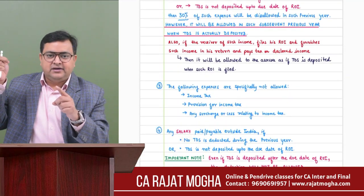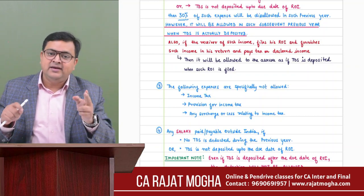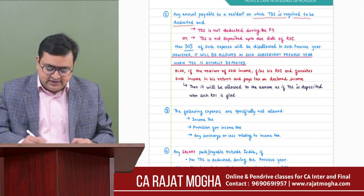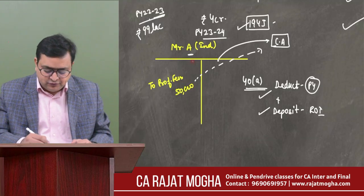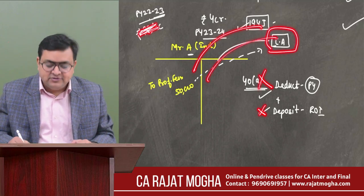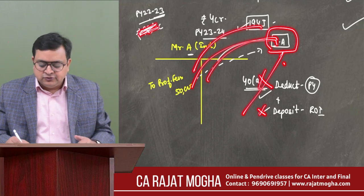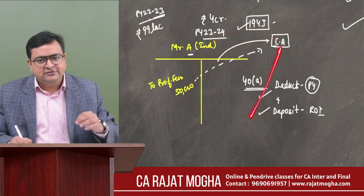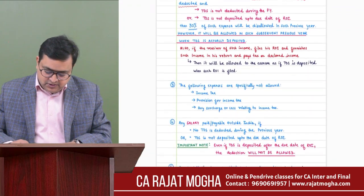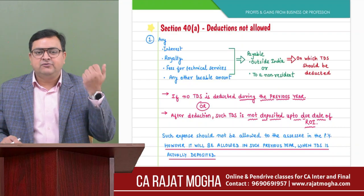The receiver-files-ROI exception applies to resident payments as well: if Mr. A has not deducted or deposited TDS but the Chartered Accountant (receiver) duly files his ROI, mentions the income, and pays tax on it, then on the date when the receiver files his ROI, TDS is assumed deposited and the deduction is allowed. Third point of Section 40(a): if you are showing income tax or provision for income tax as an expense in your PnL account, it is specifically not allowed.